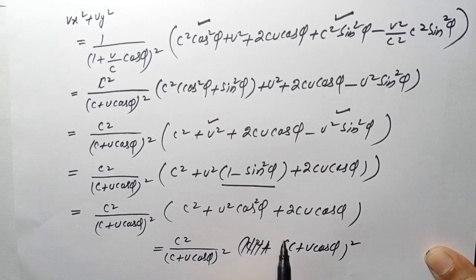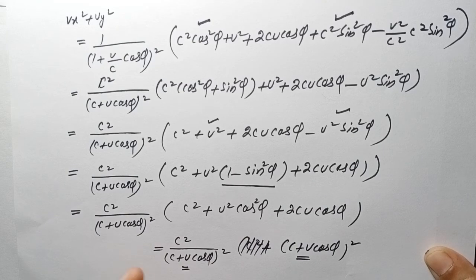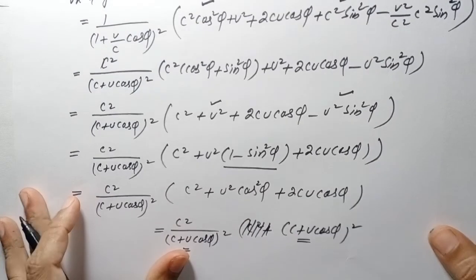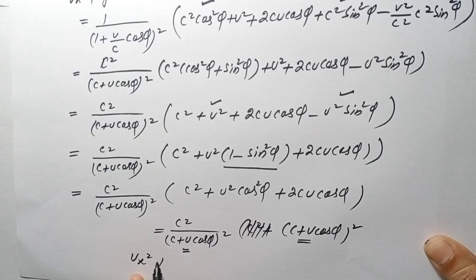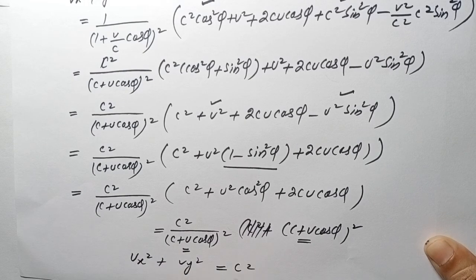This term cancels with the denominator (c plus v cosine phi) squared, and we are left with vx-squared plus vy-squared equals c-squared, which is what we needed to prove.